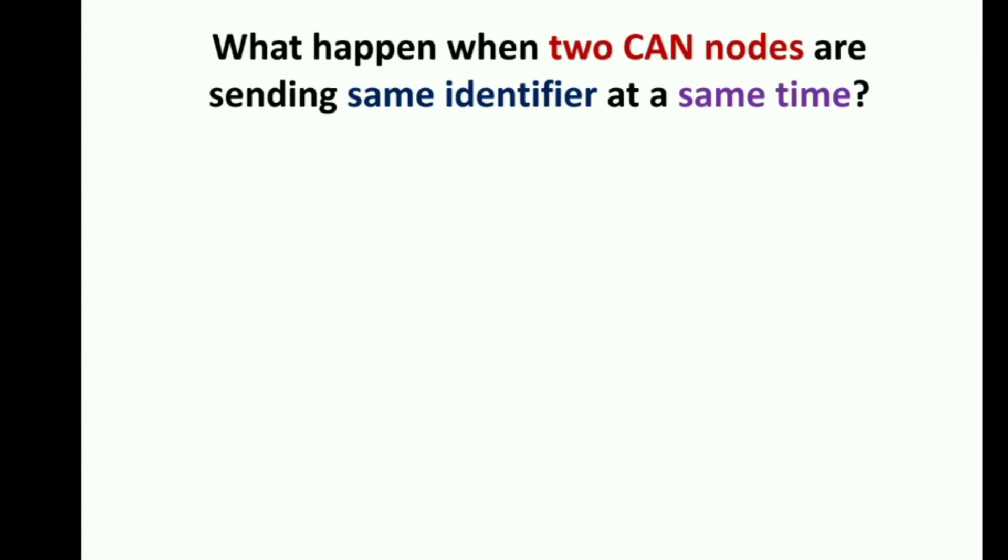It's really an important concept that you have to learn, not only in terms of interview, but also you have to understand this concept and apply this in your work environment. So the question is: What happens when two CAN nodes are sending the same identifier at the same time?